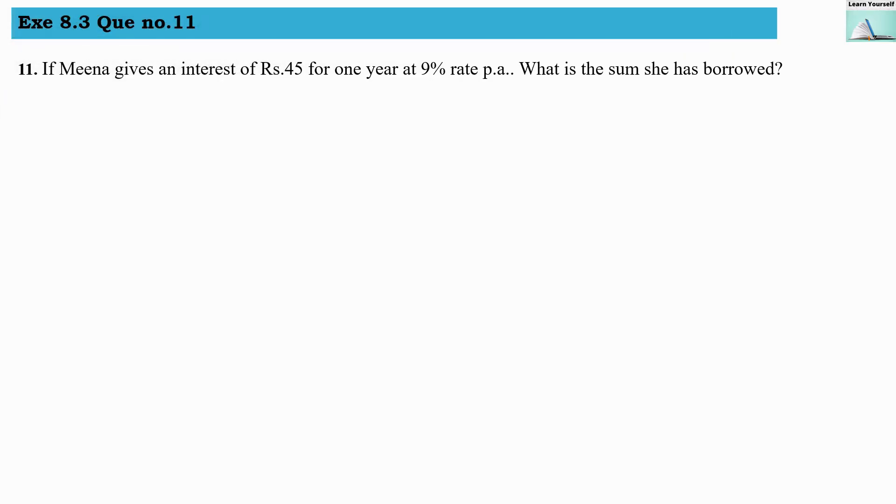Exercise 8.3 question number 11. If Meena gives an interest of rupees 45 for one year at 9% rate per annum, what is the sum she has borrowed? So we have to find out the sum, that is the principal amount.